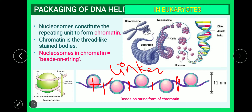The width of the nucleosome is 11 nanometers and the height is 7 nanometers. The nucleosome constitutes the repeating unit of chromatin, which is a thread-like stained structure. Nucleosomes in chromatin appear like beads on a string.